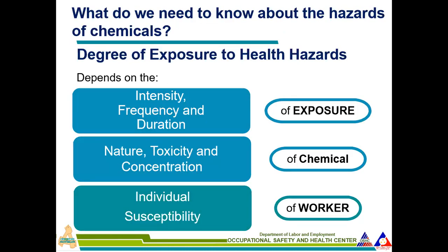What do we need to know about the hazards of chemicals? The degree of exposure depends on intensity, frequency, and duration of your exposure. It also depends on the nature of exposure, toxicity and concentration of the chemicals, and the individual susceptibility of the worker — since people react differently. For example, some COVID-19 patients are asymptomatic while others have severe reactions. Similarly, some workers exposed to chemicals have allergic reactions while others have comorbidities that make them more vulnerable.